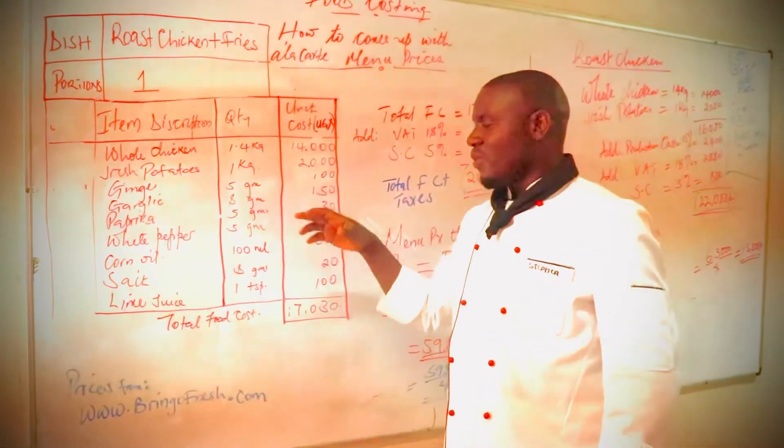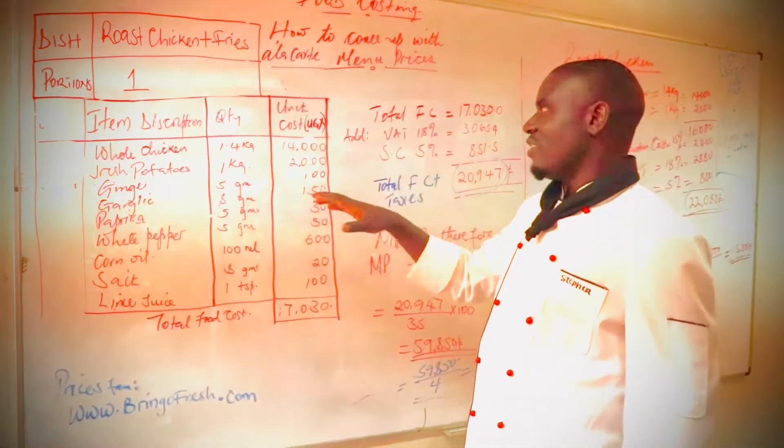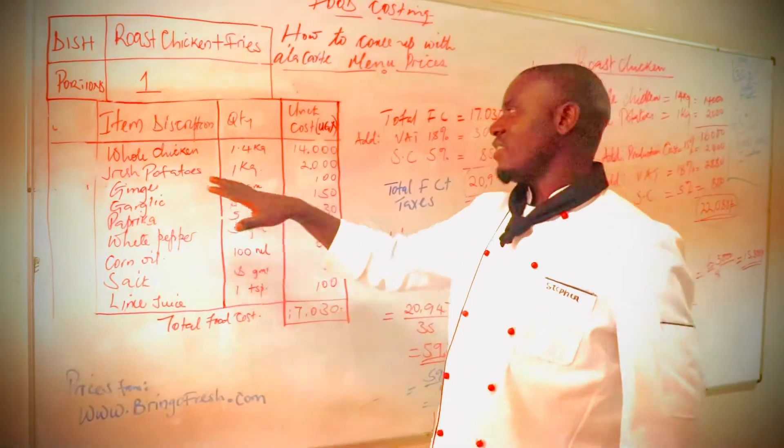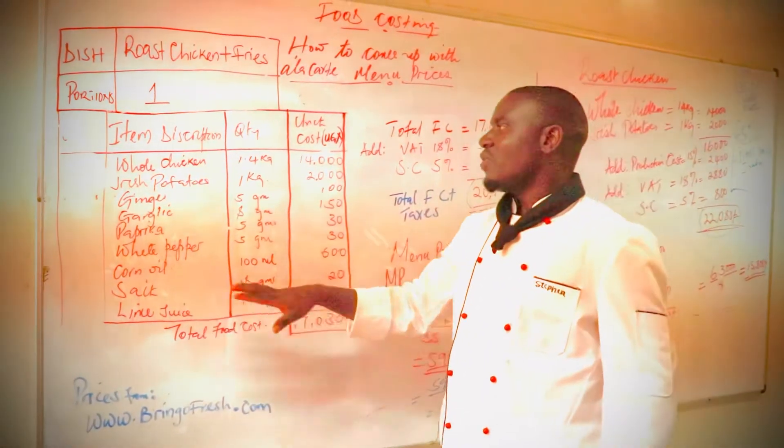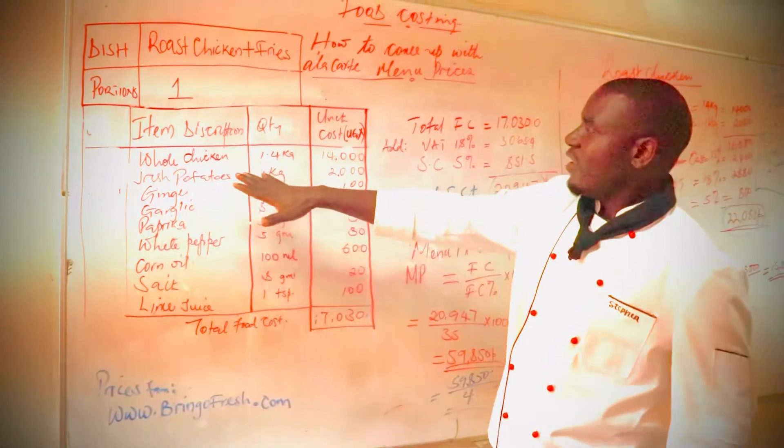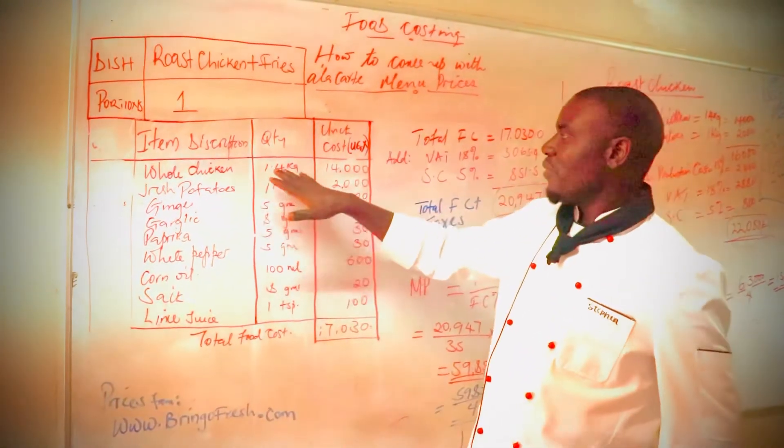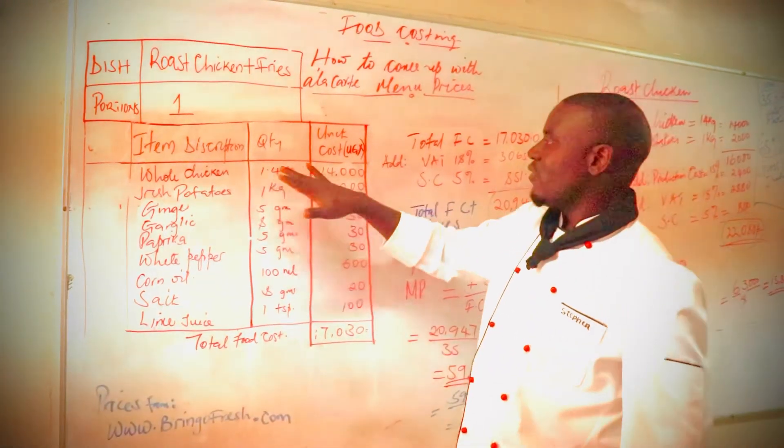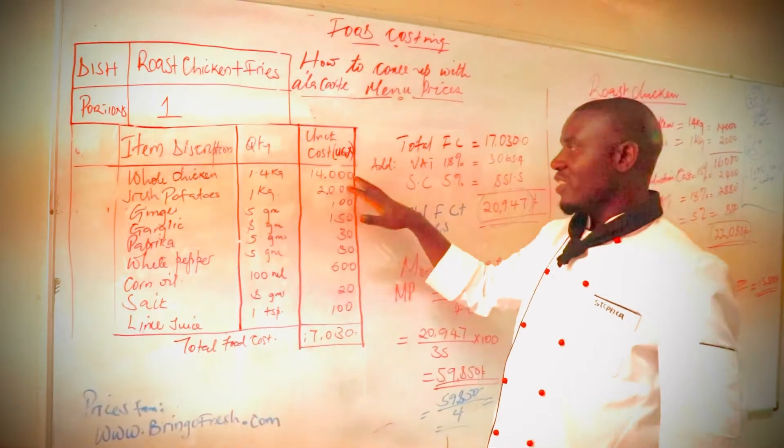Quantities is what grams do we need to produce the dish and the unit cost is how much will it cost per each unit. So as we see the whole chicken is right there, 1.4 kilograms which is 14,000.